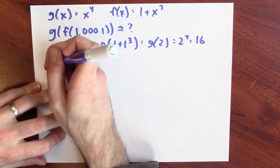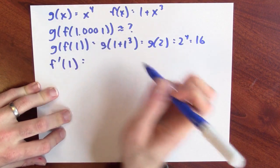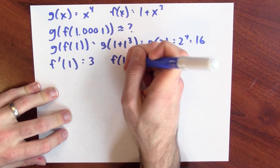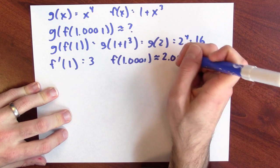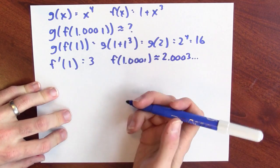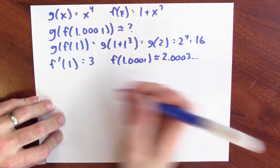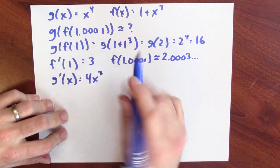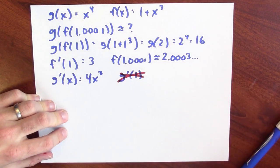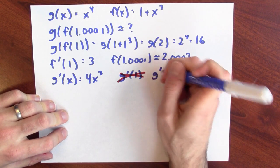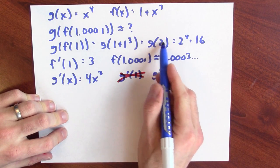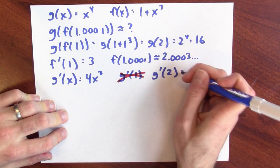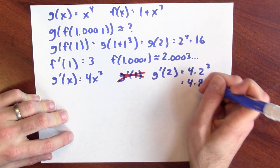I can do it in stages — that's what the chain rule tells me to do. First, the derivative of f is 3x squared, so the derivative of f at 1 is 3. And indeed, f of 1.0001 is about 2.0003. Now I want to calculate how changing the input to g affects the output. The derivative of g is 4x cubed by the power rule. But where should I evaluate it? Your first temptation is to calculate the derivative of g at 1, but that's not right — you're not wiggling the input 1 to g. You should calculate the derivative of g at 2, because it's the output of f, which is 2, that's going to be wiggling. That's 4 times 2 cubed, which is 4 times 8, which is 32.